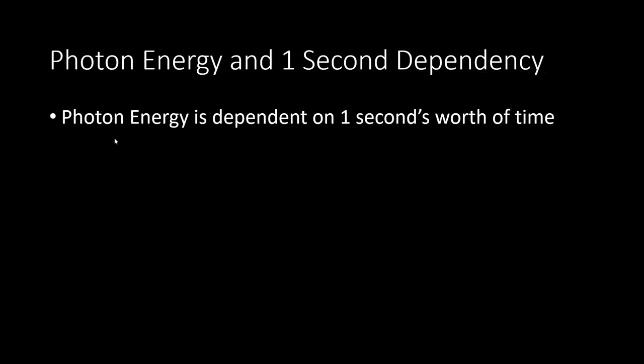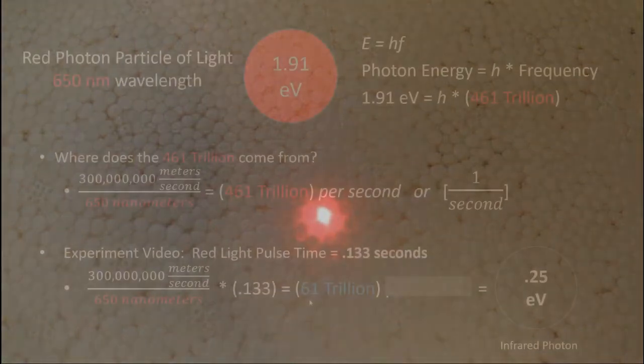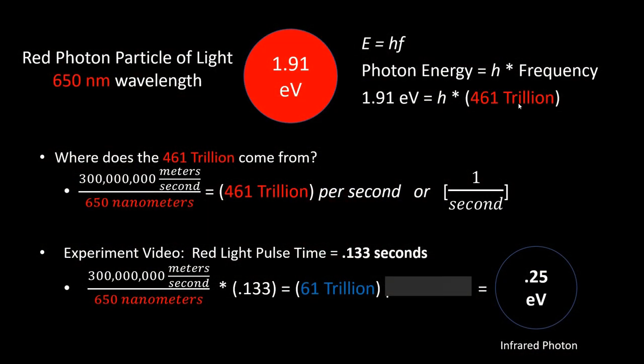So we can see that photon energy is dependent on one second's worth of time when it comes to the math equation. The experiment still showed us a red colored light pulse, and the math did not agree with that when it was less than one second. With 61 trillion in this equation, the only way to get a red photon would be to modify Planck's constant.